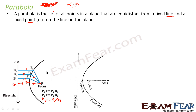If you draw a curve like this, any point on this curve — P1, P2, P3, P4 — the distance of those points from the fixed line and the distance of those points from the fixed point is the same. The distance of P1, P2, P3, P4 from the focus and the distance of these points from B1, B2, B3 on the line are the same. So please note: parabola is the set of all points in a plane that are equidistant from a fixed line and a fixed point.